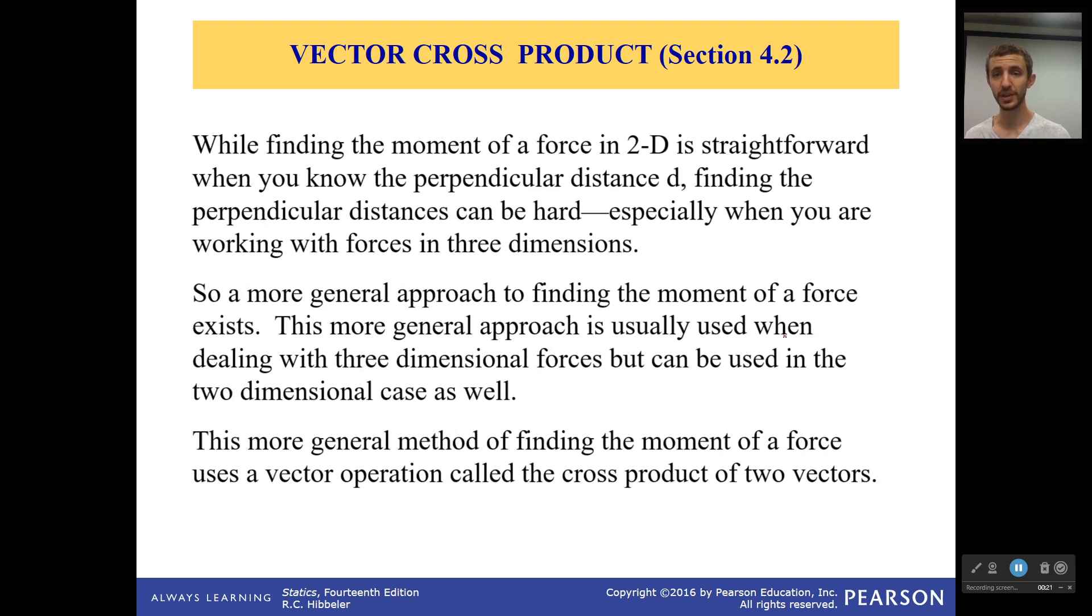Usually the big reason for learning about this is because of that 90 degree angle thing. Remember those two vectors had to be 90 degrees from each other to just use their magnitude. If it weren't at 90 degrees, you couldn't just use the magnitude to calculate it. However, the vector cross product gets rid of all of that.